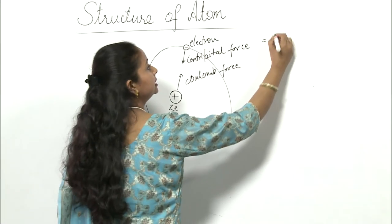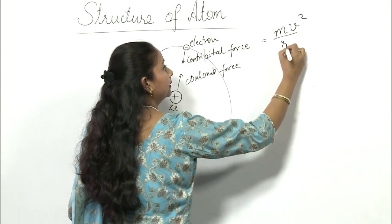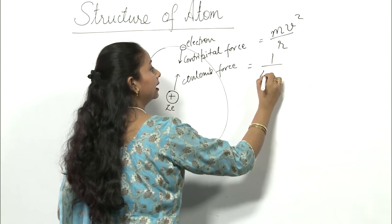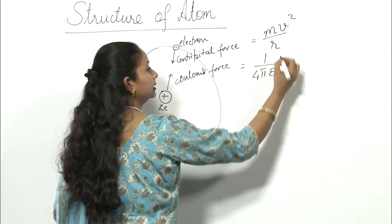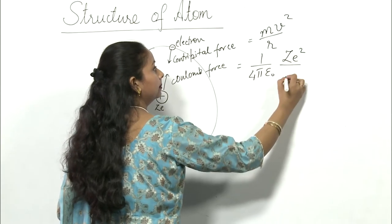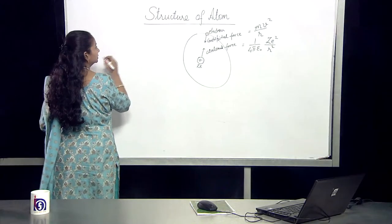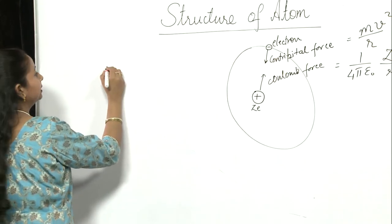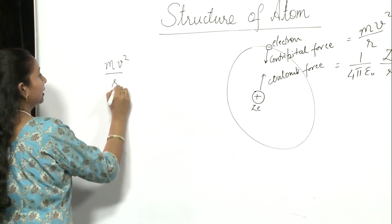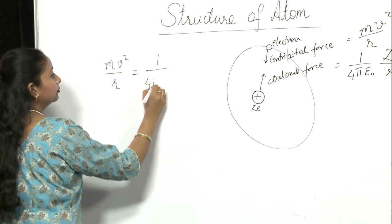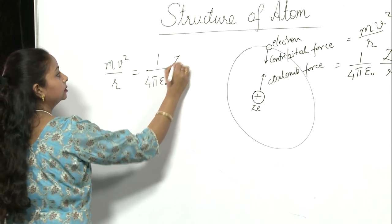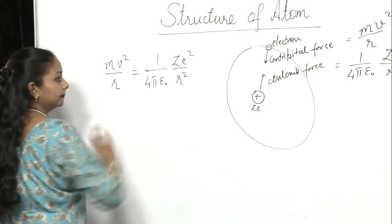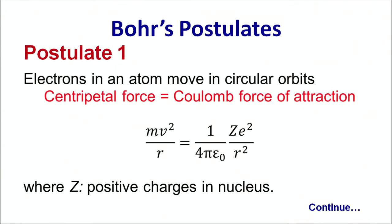This centripetal force is equal to mv^2/r and the coulomb force is given by 1/(4πε₀) × Ze^2/r^2. So in order that the electron is orbiting around the nucleus, these two forces should be equal. That is mv^2/r should be equal to 1/(4πε₀) × Ze^2/r^2. So when the electron is revolving around the nucleus, these two forces will compensate and it will have a constant energy.